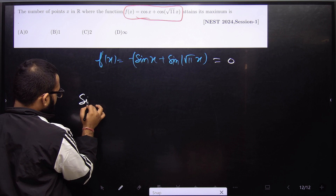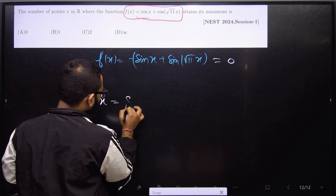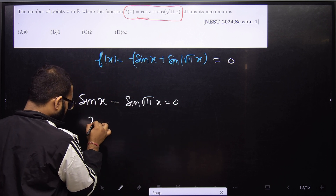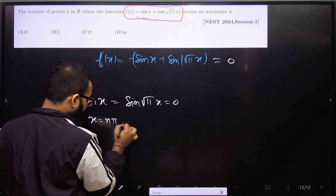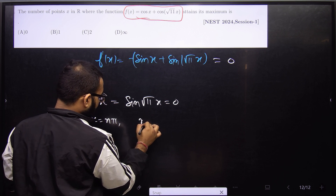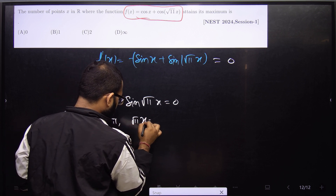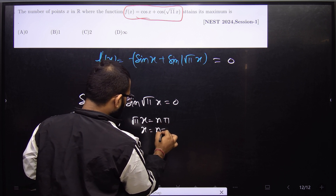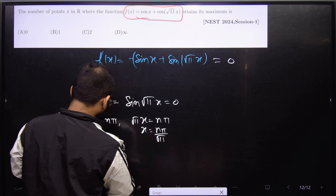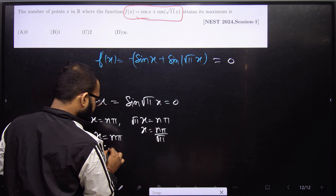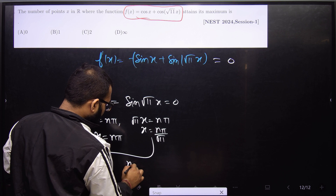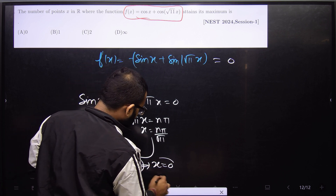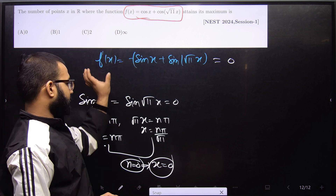The first case is both terms equal to zero: sin(x) = 0 and sin(√11·x) = 0. This gives x = nπ and also x = nπ/√11. Taking the intersection of these two sets, we get only n = 0, so x = 0 is one solution of this derivative equation.